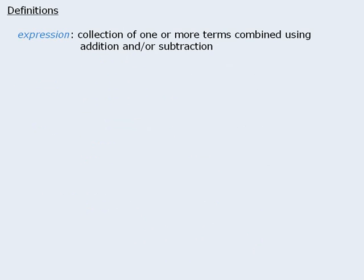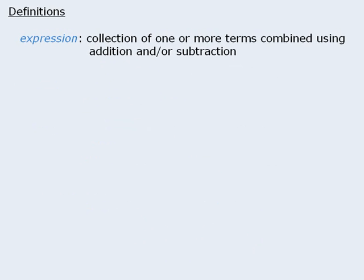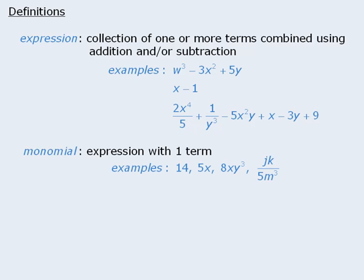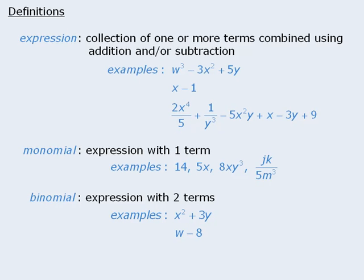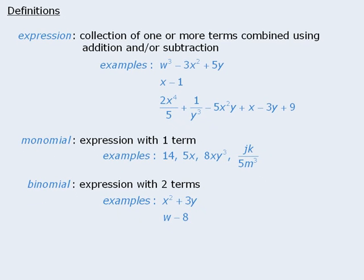The next word is expression. This is a collection of one or more terms that are combined using addition and/or subtraction. Some examples of expressions include w cubed minus 3x squared plus 5y, and x minus 1. A monomial is an expression consisting of one term. A binomial is an expression consisting of two terms. And in general, the word polynomial applies to any expression consisting of one or more terms.